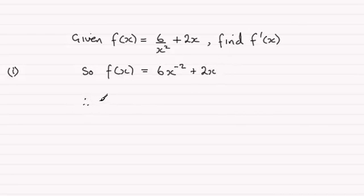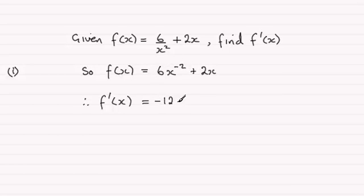So when it comes to finding f dash x — the first differential of f of x with respect to x — we just multiply the power minus 2 by the value in front of x, so minus 2 times 6 is minus 12, and then we reduce the power by 1, so we end up with x to the power minus 3. As for 2x, when you've got an ax type term, you just drop the x, so it's just going to be plus 2.